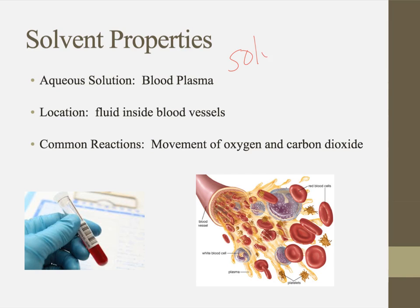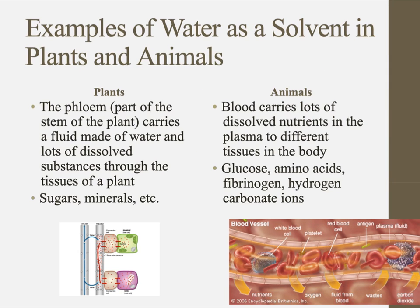Your blood is both a solution and a suspension. It's a suspension in the fact that your blood is made up of a liquid called plasma with a bunch of undissolved things — like your white and red blood cells — floating around in it. What makes it a solution is that your blood plasma has a lot of solutes dissolved in it: proteins, glucose, antibodies, and all kinds of things dissolved in your blood plasma, including carbon dioxide and oxygen. It's important for oxygen to be able to diffuse into your blood vessels through the plasma in order to get to the red blood cells.